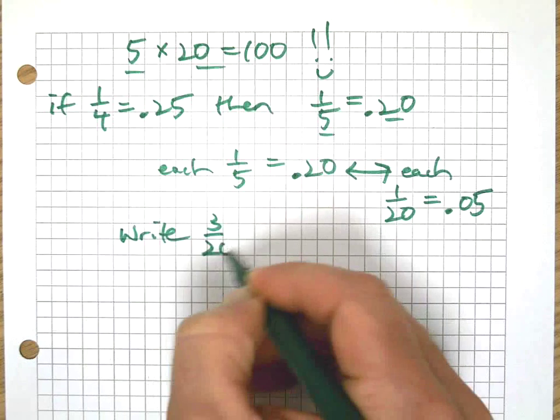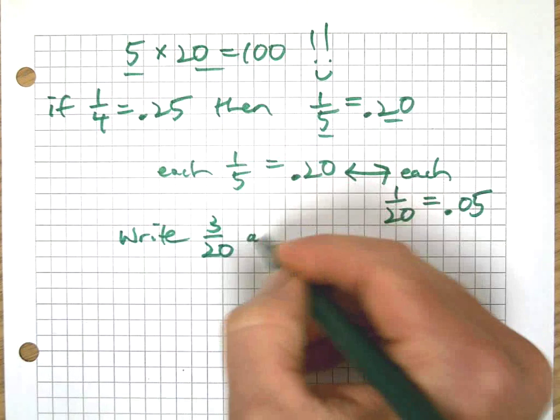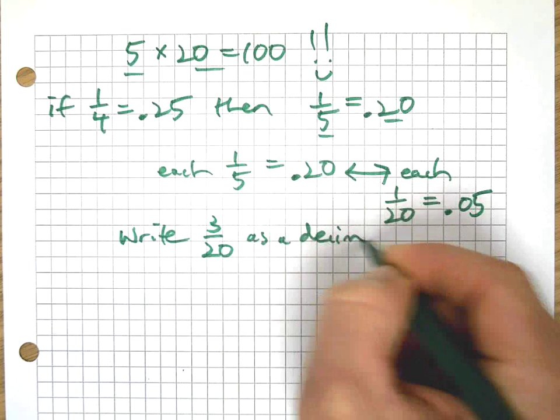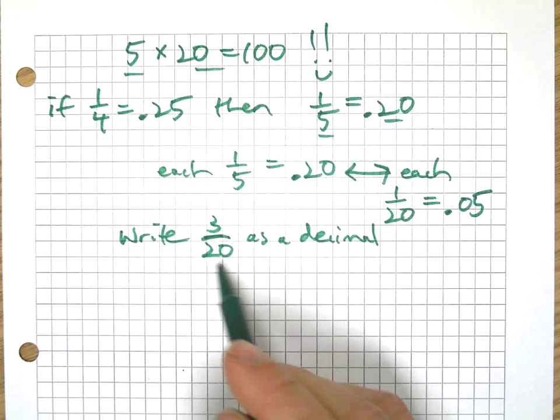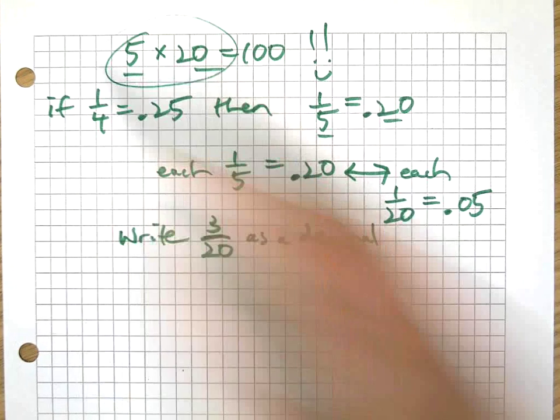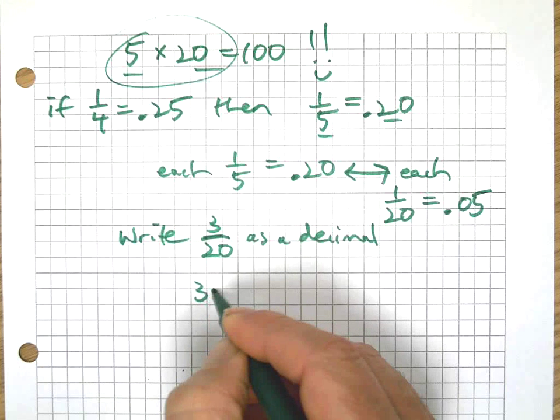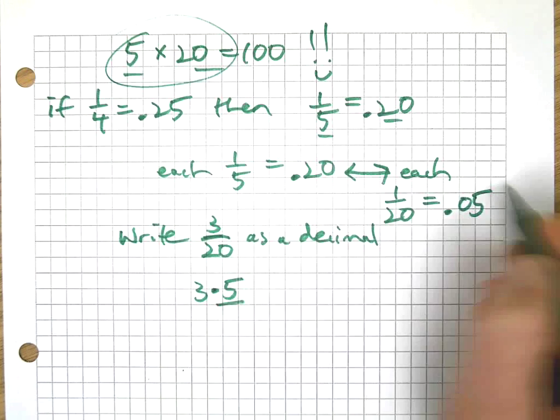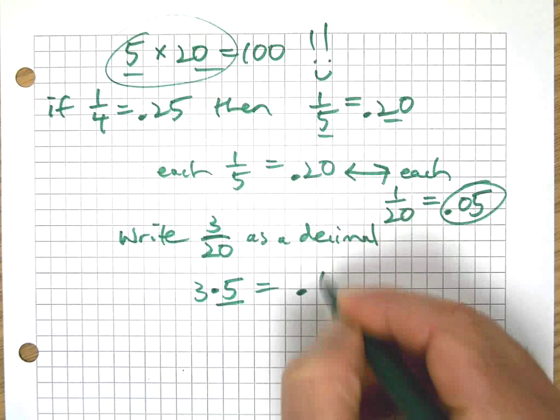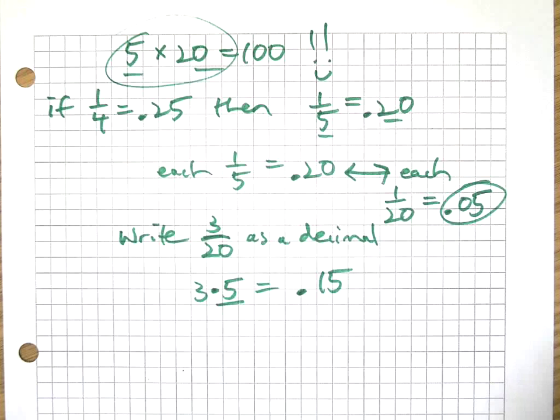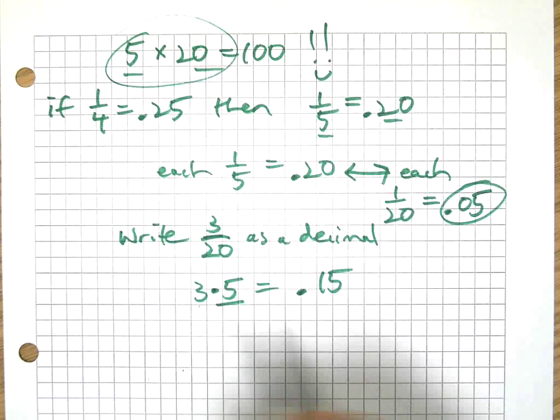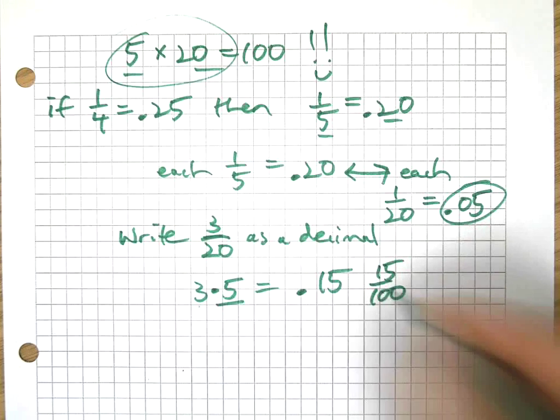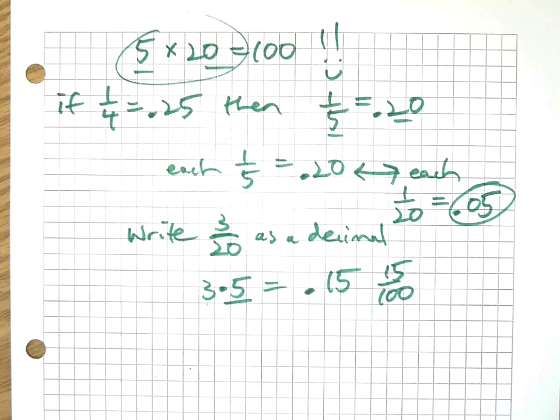So what this means is if you're given a fraction like three-twentieths and told to make it a decimal, you could do it the old-fashioned way with long division or use a calculator. Or you could remember that 20 times 5 is 100, so each one of these is worth 5 cents, so that's going to be 15 hundredths. Each twentieth is worth 5, so three-twentieths is worth 15, or 3 times 5, or 15 hundredths.